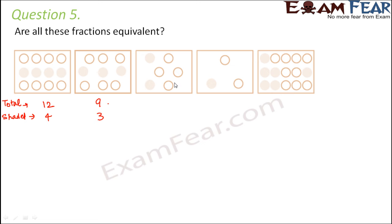Here total is 9 and shaded is 3. Here total is 6 and shaded is 2. Here total is 3, shaded is 1. Here total is 15 and shaded is 6.